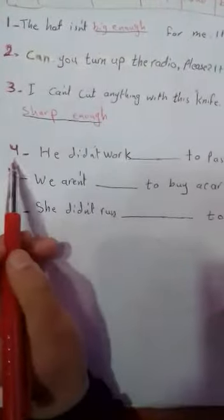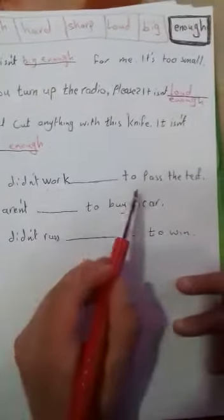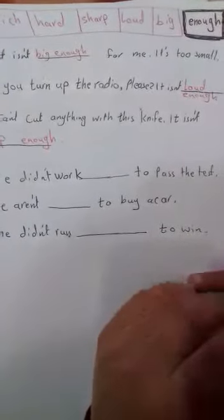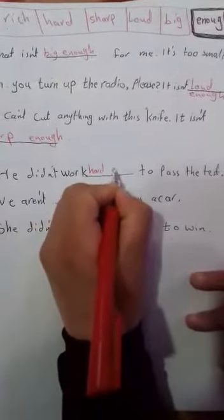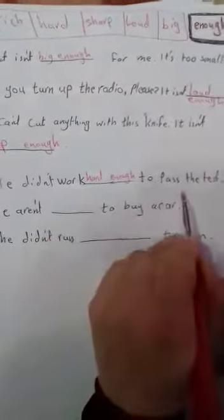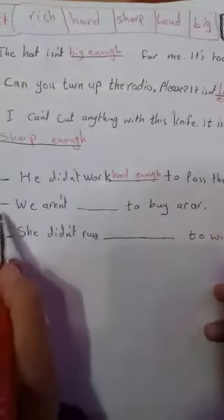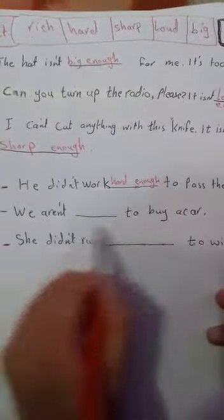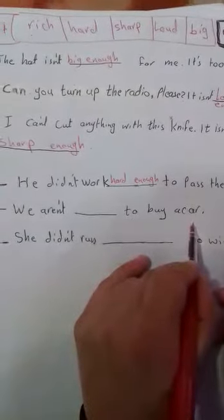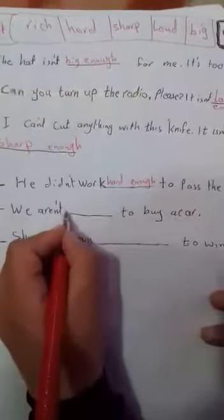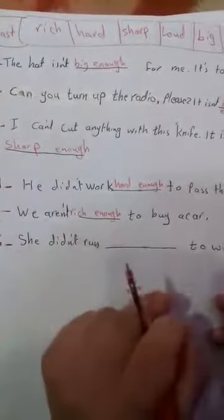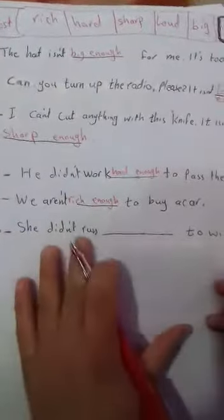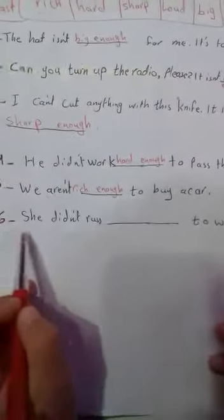Number four: He didn't work to pass the test. He didn't work hard enough to pass the test. Sentence number five: We aren't to buy a car. We aren't rich enough. Can we say enough rich? No, this is wrong.